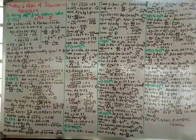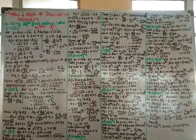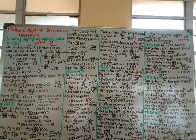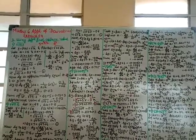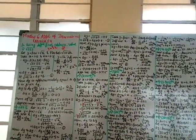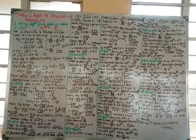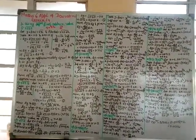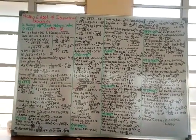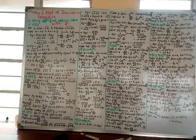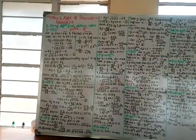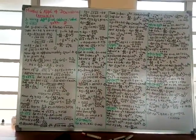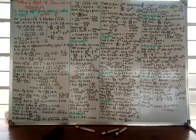We'll continue with question number 2 in the next class. The method is simple: first define f(x) based on what root you need to find. Take x as the nearby number whose root is perfect, and δx as the remainder. Differentiate to get dy/dx, use the formula δy ≈ dy = (dy/dx)·δx, then substitute into the equation f(x + δx) = f(x) + δy to find the approximate value.